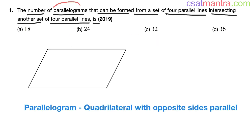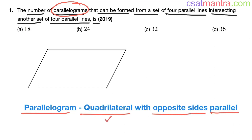Now, what is a parallelogram? A parallelogram is a quadrilateral with opposite sides parallel to each other. Quadrilateral means a four-sided closed shape — 'quad' means four.